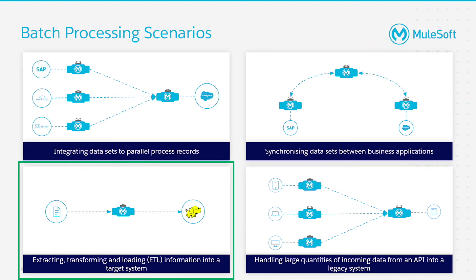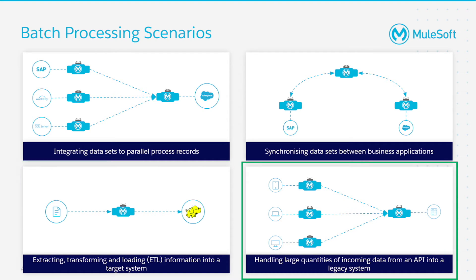Another scenario is extracting, transforming, and loading information into a target system — what we call ETL. For example, uploading data from a flat file like CSV to Hadoop. Finally, another common scenario is handling large quantities of incoming data from an API into a legacy system.